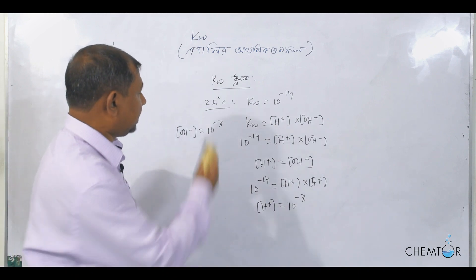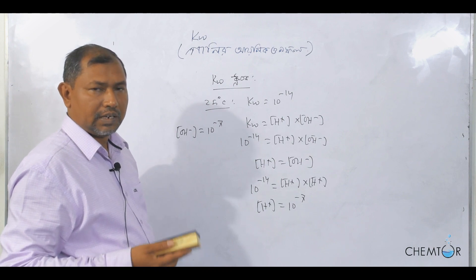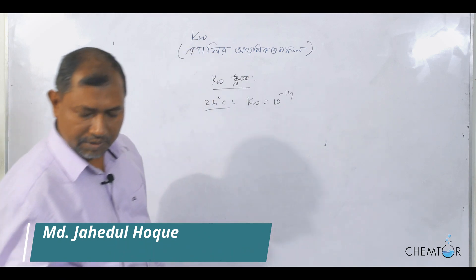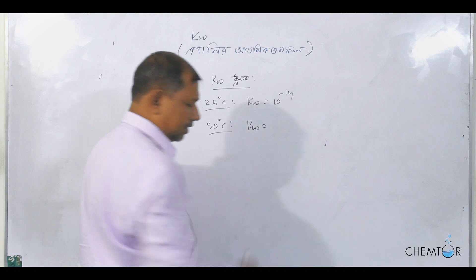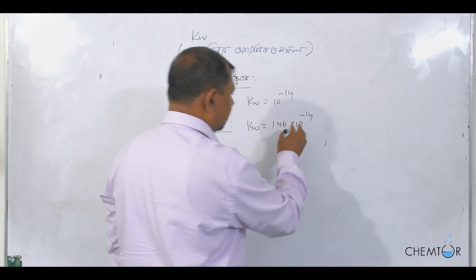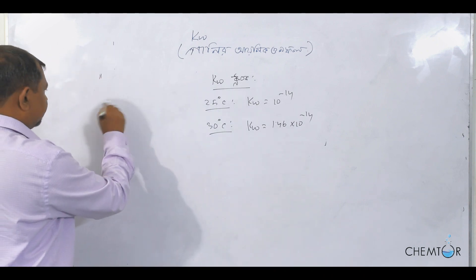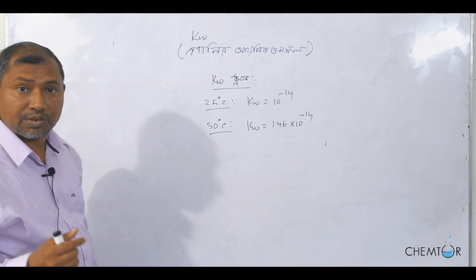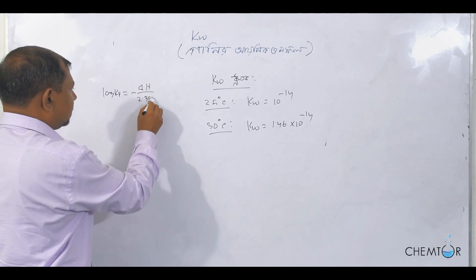Now we have to consider the temperature effect. When we change the temperature, the Kw will change. Let's consider the temperature of 30 degrees Celsius. At this temperature, Kw is 1.46 into 10 to the power minus 14. The temperature effect on Kw is described by: minus delta H by 2.303 into R into 1 by T.